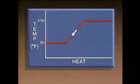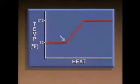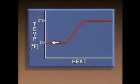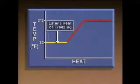When heat is removed from water, there is a sensible heat transfer and the water temperature drops until it reaches 32 degrees. At that point, any heat removed is latent heat, so the temperature remains at 32 degrees. This line represents the latent heat of freezing — the amount of heat that has to be removed from a substance to freeze it without producing a change in temperature or pressure.